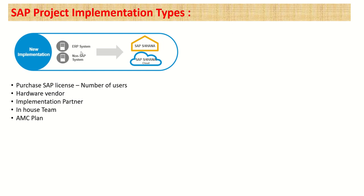Since the company is currently not using SAP, they don't have any internal knowledge. Very rarely do big companies develop an in-house team to implement. Most of the time, they hire an implementation partner. For example, if Reliance wants to implement SAP, they can go with implementation partners like PwC, IBM, Accenture, or TechM. The implementation partner will carry out all the required activities for the implementation.